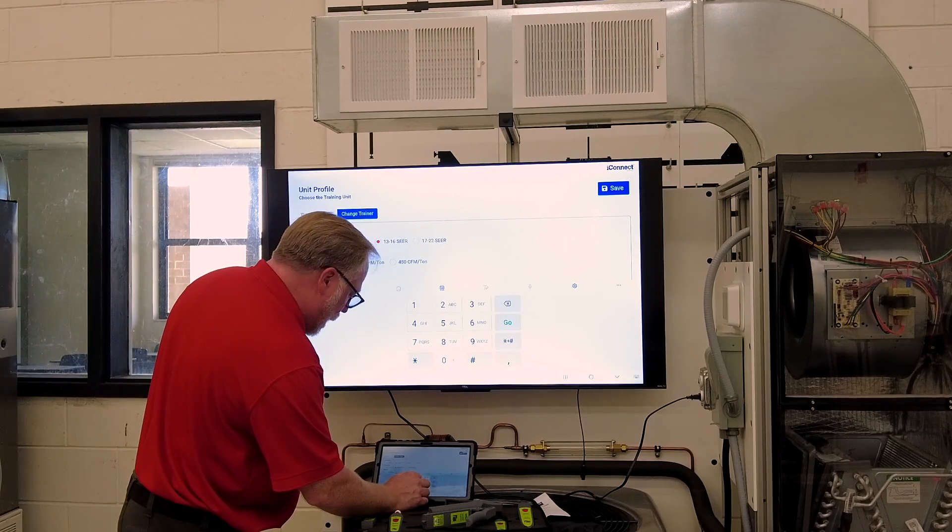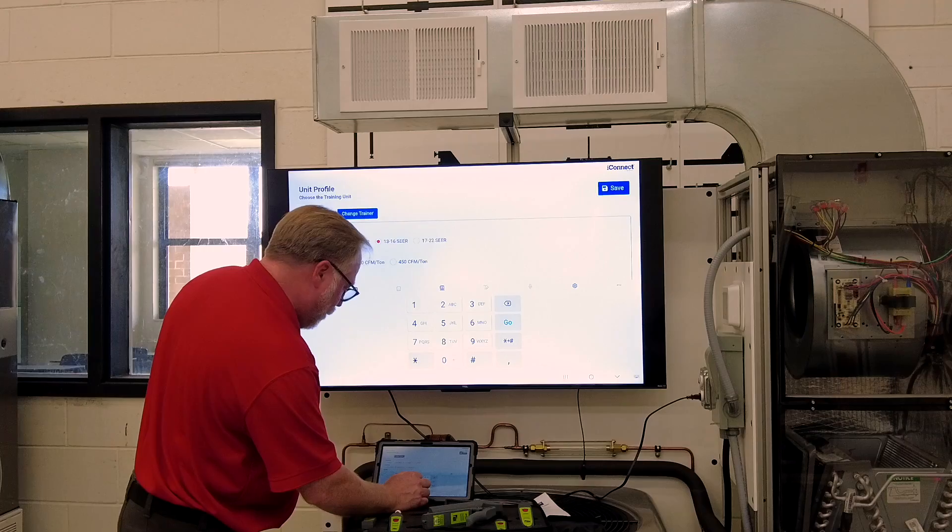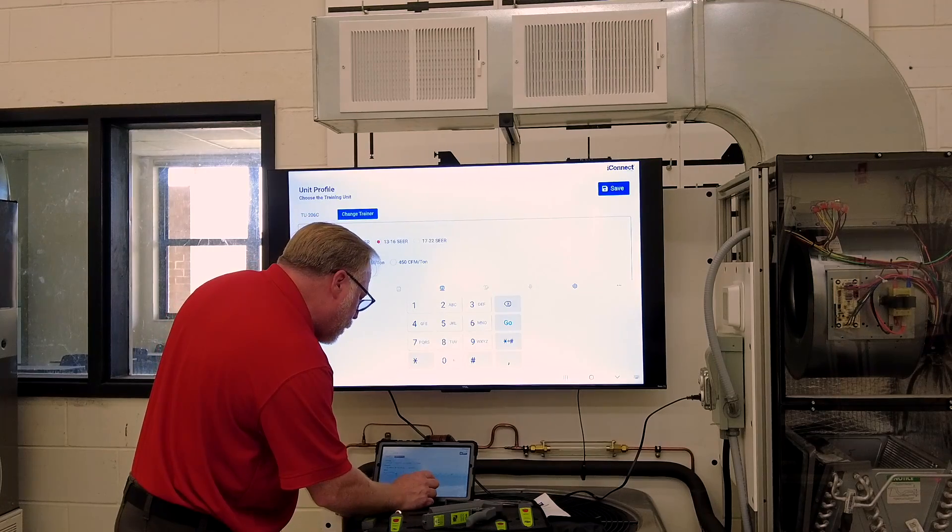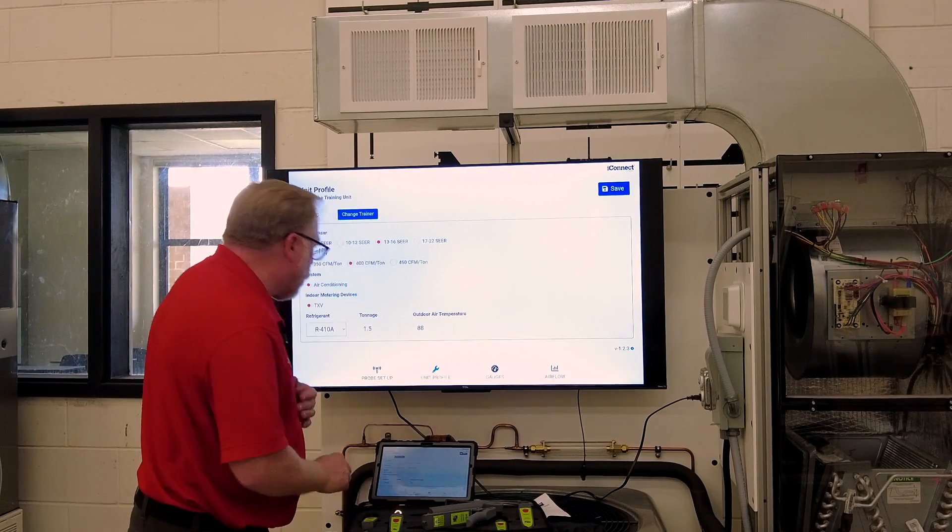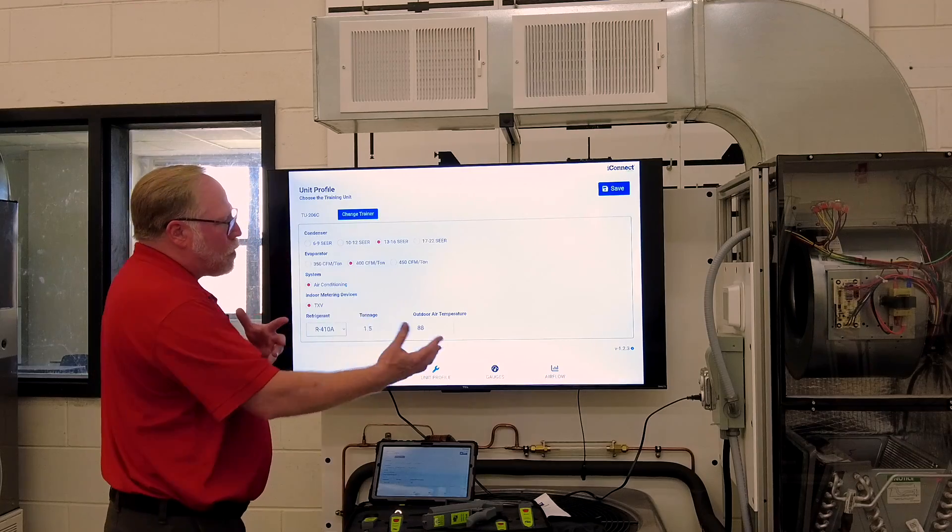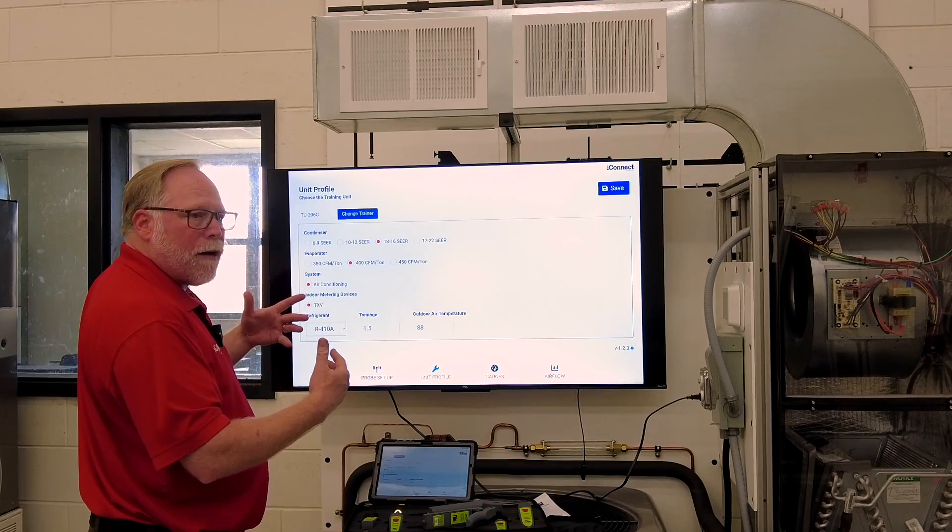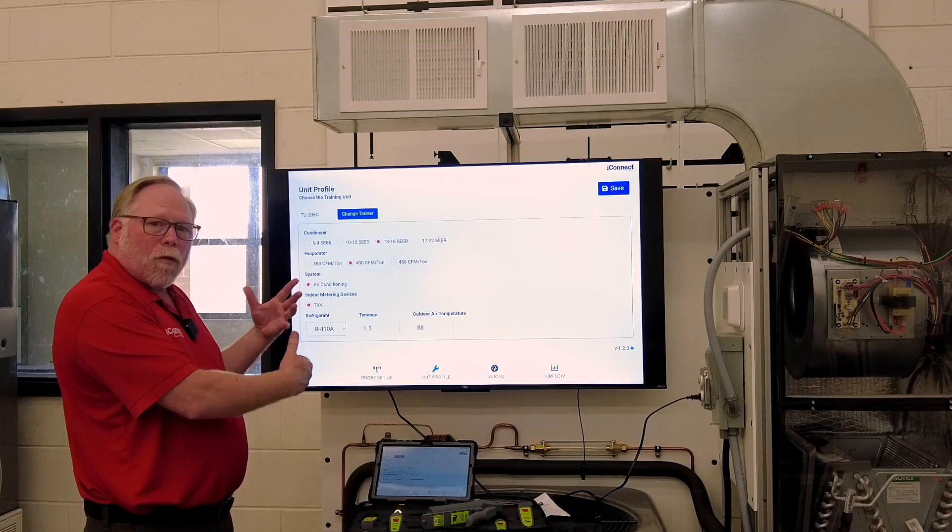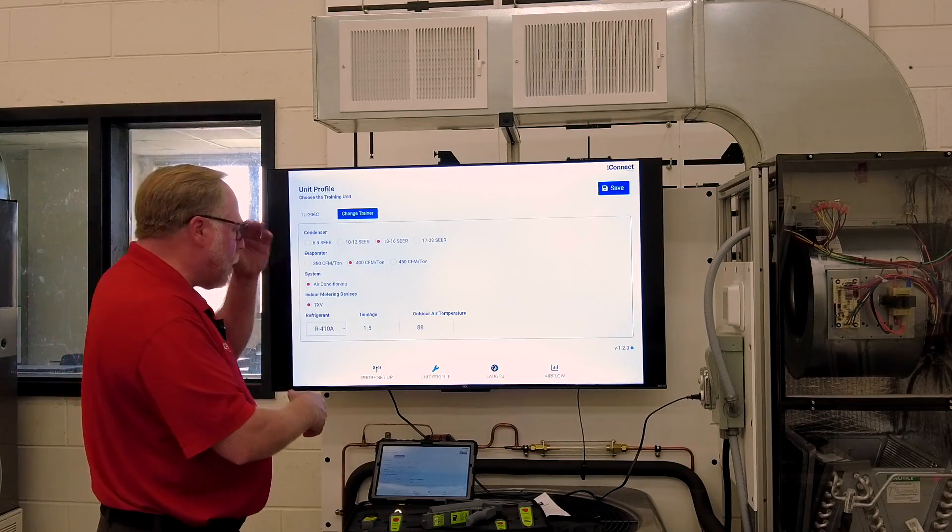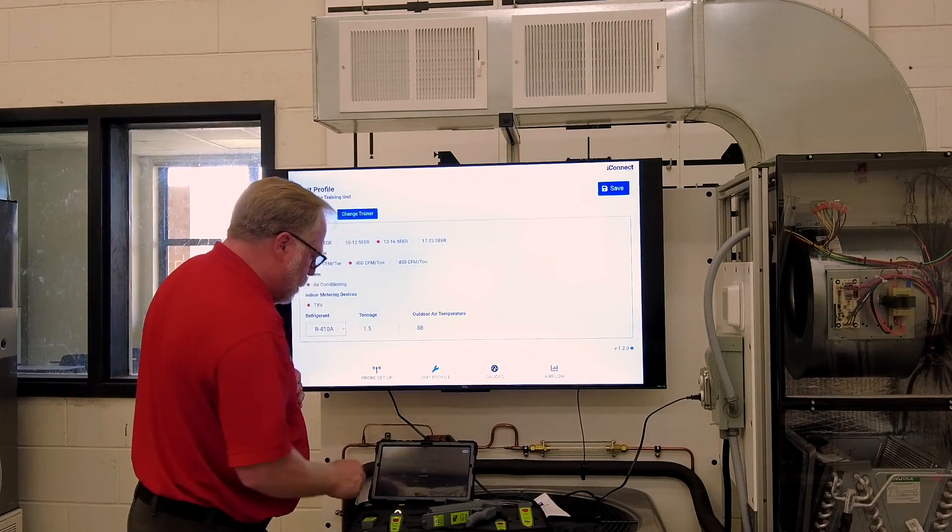So I'm going to change mine here. It is 88 degrees in this lab. Let's see here. There we go. It is 88 degrees. And so now this unit is going to get a better idea of what parameters it should be working at, at 88 degrees outdoor air temp. And then save it.